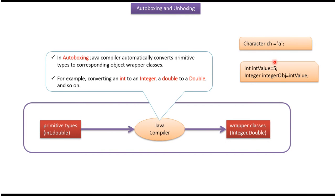Here you can see the example of autoboxing. Here, primitive data type character will be automatically converted to Character object by Java compiler. Here, primitive data type int value will be automatically converted to Integer object by Java compiler.